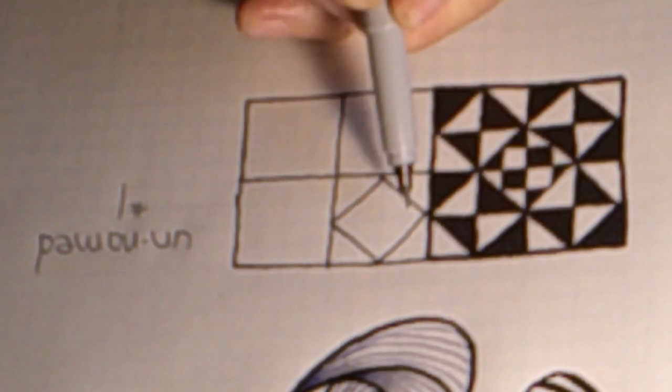And then inside of this square that we just made, we're going to draw diagonal lines.